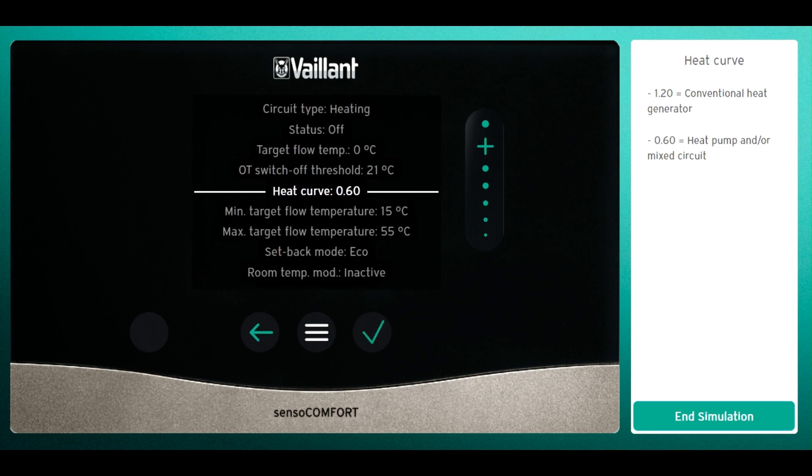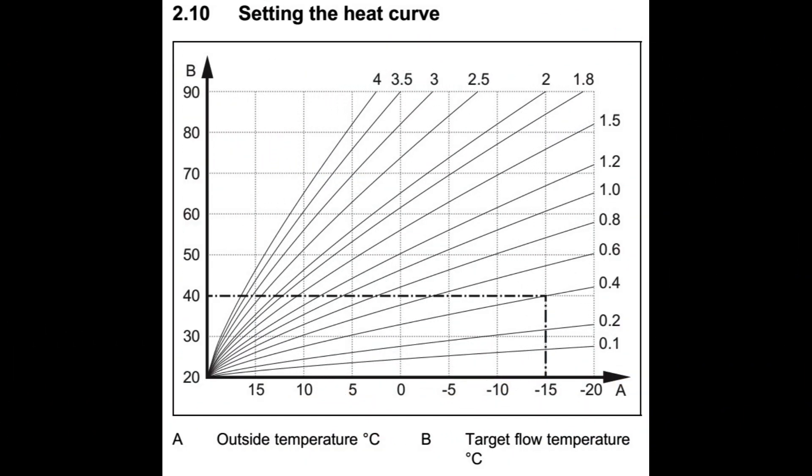It can be adjusted using the bar on the right hand side, but for illustration purposes we're going to use the standard curve. So this is what the heat curve looks like. What we're going to do is have a look at the outside temperature highlighted in blue, then we're going to see the target flow temperature highlighted in orange and the curve number highlighted in green.